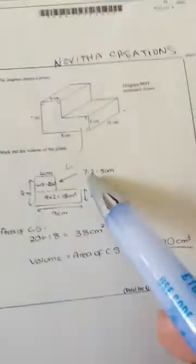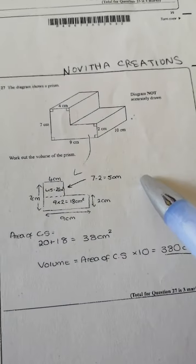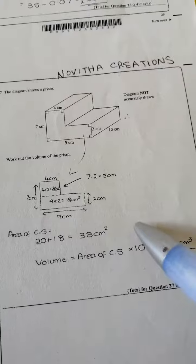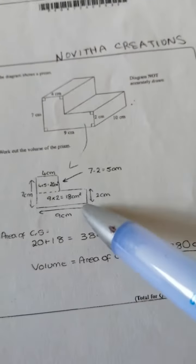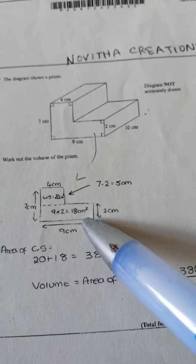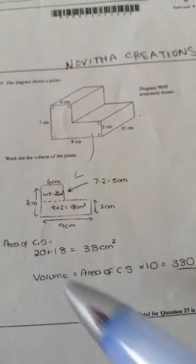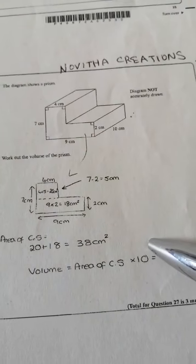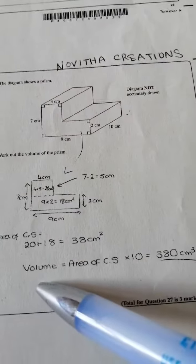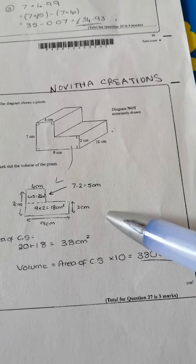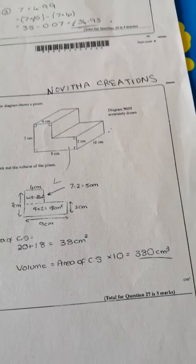So 7 take away 2 equals 5 centimeter. Area of cross section equals 20 add 18, which will give you 38 centimeter square. Volume equals area of cross section times 10, which will give you 380 centimeter cube.